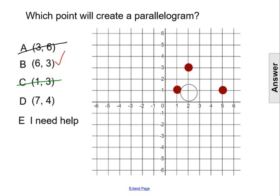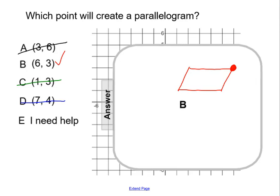So the only point again, let's review, 7,4 did not work, we just saw. The only point that worked was 6,3 plotted here, which gave you your two opposite sides parallel to each other. It created a parallelogram. So our answer is choice B.